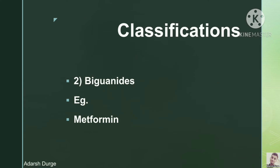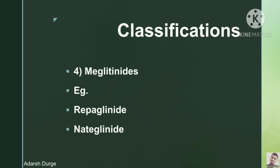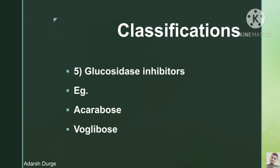The second one is biguanides; the example of biguanides is metformin. The third one is thiazolidinediones; examples are pioglitazone and rosiglitazone. The fourth one is meglitinides; examples are repaglinide and nateglinide. The fifth and last one is glucosidase inhibitors; examples are acarbose and oglibose.